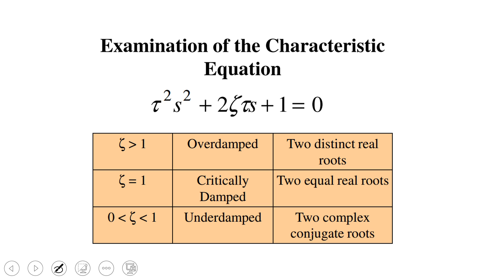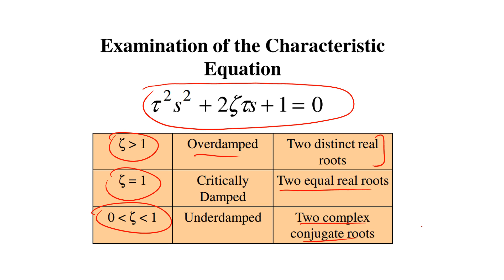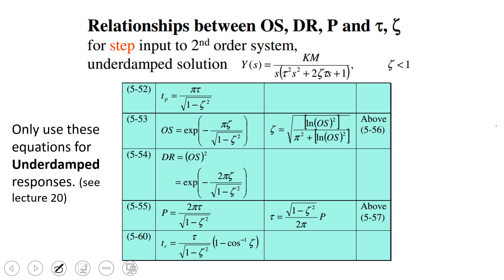Looking at the characteristic equation — the denominator of a second order system — if zeta is greater than 1, the system is overdamped with two distinct real roots and no imaginary parts. Critically damped gives two equal real roots. Underdamped gives two complex conjugate roots with imaginary parts, and the system will oscillate. Critically damped comes up to the new steady state without oscillation, while overdamped comes up more slowly. There are relationships between overshoot, damping ratio, period, tau, and zeta, but these only apply for underdamped systems when zeta is less than 1.